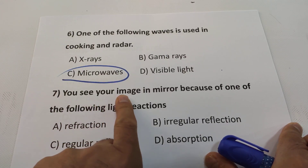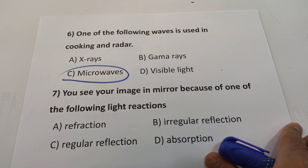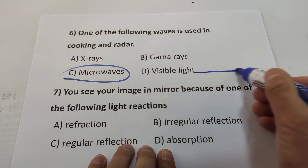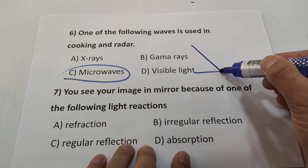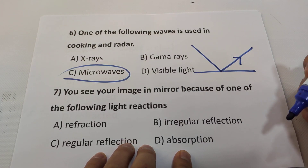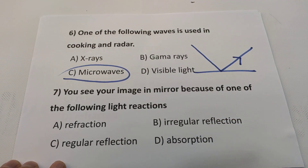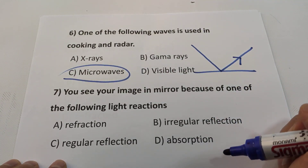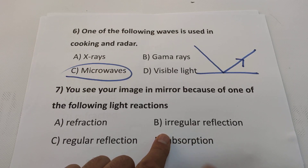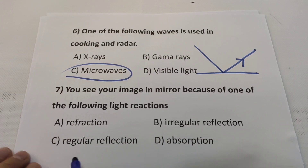Question 7: You see your image in a mirror because of which light reaction? We can see objects because of light reflection. From a mirror, it is mostly regular reflection. There are two kinds of reflection: diffuse reflection and regular reflection. A mirror produces regular reflection.